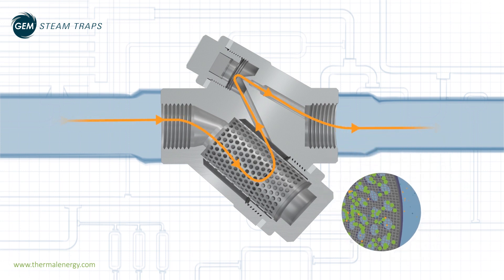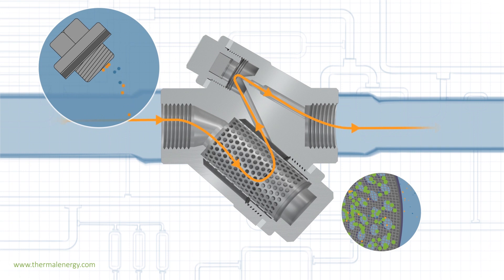In most steam systems, the most prevalent form of debris is corroded iron from the pipework, which is highly magnetic. The GEM trap's patented magnetic filter captures any magnetic particles that pass through the fine mesh strainer basket.